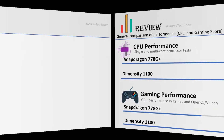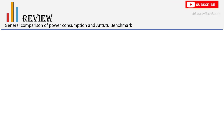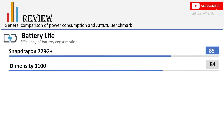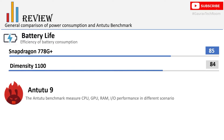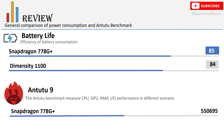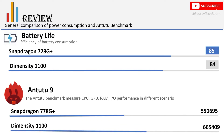Next, we will talk about power consumption, which depends on the fabrication. Snapdragon score is 85 and Dimensity score is 84. For the AnTuTu benchmark, Snapdragon score is 55,695 and Dimensity score is 665,409.